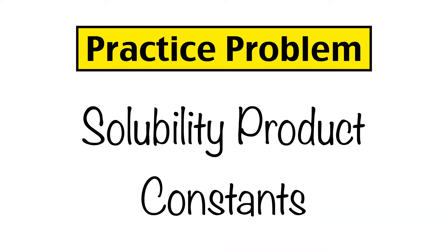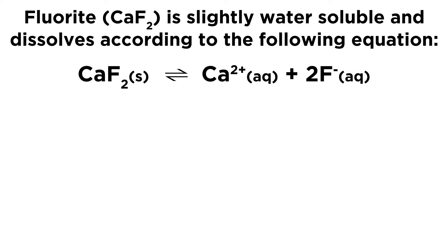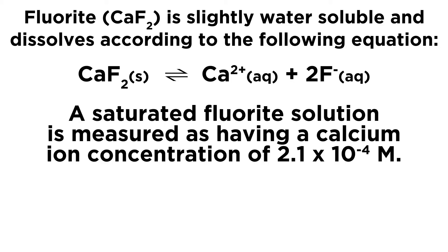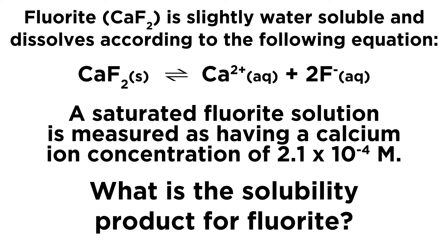Let's practice using solubility product constants. Fluorite, or CaF₂, is slightly water-soluble and dissolves according to the following equation. We have fluorite solid in equilibrium with the calcium 2+ ion and two fluoride ions. A saturated fluorite solution is measured as having a calcium ion concentration of 2.1 times 10 to the negative 4 molar. So what is the solubility product for fluorite?